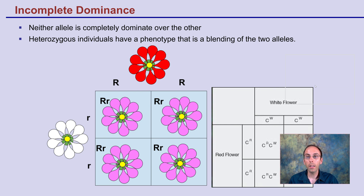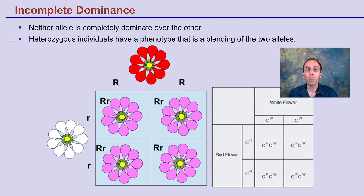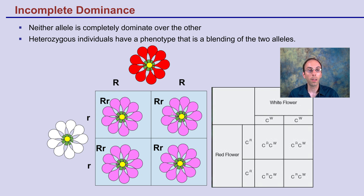Looking at the first one: incomplete dominance. Neither allele is completely dominant over the other. In this case, we have big R representing red petals and little r representing white petals. When we cross these two together, red isn't dominant over white and white isn't dominant over red — we get a blending. The heterozygote individuals, the big R little r's, have a phenotype that's a blending of the two alleles — in this case, pink or pinkish purple.